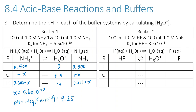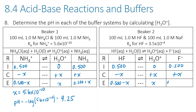Beaker 2 is HF and NaF. After dilution, concentrations are 0.05 M HF and 0.05 M F⁻. Solving the Ka equilibrium expression using the K is small shortcut gives x = 3.5×10⁻⁴ for [H₃O⁺]. Taking the negative log gives a pH of 3.46.